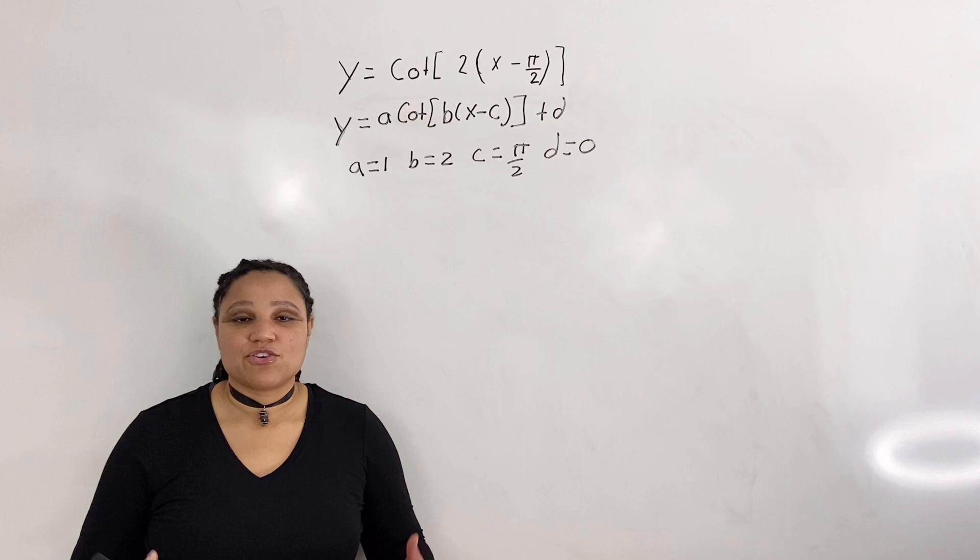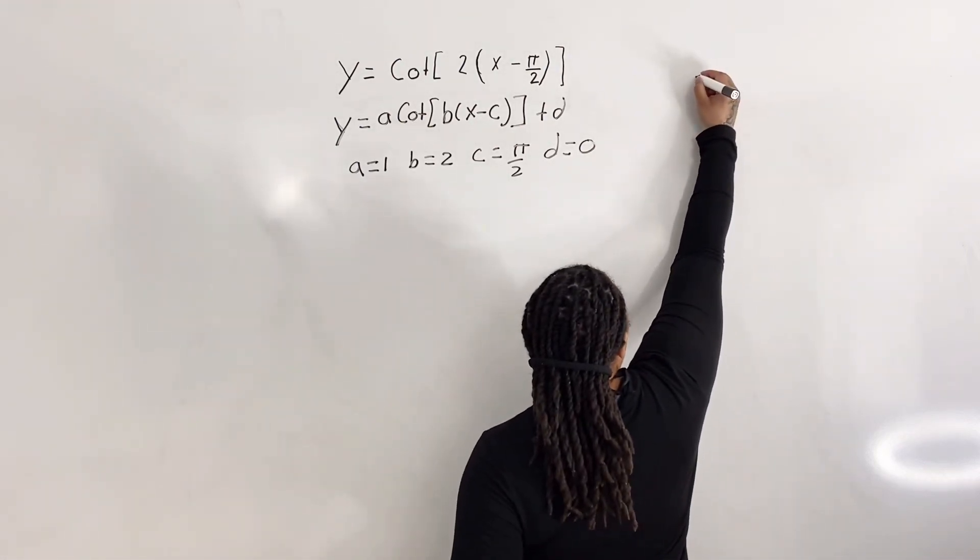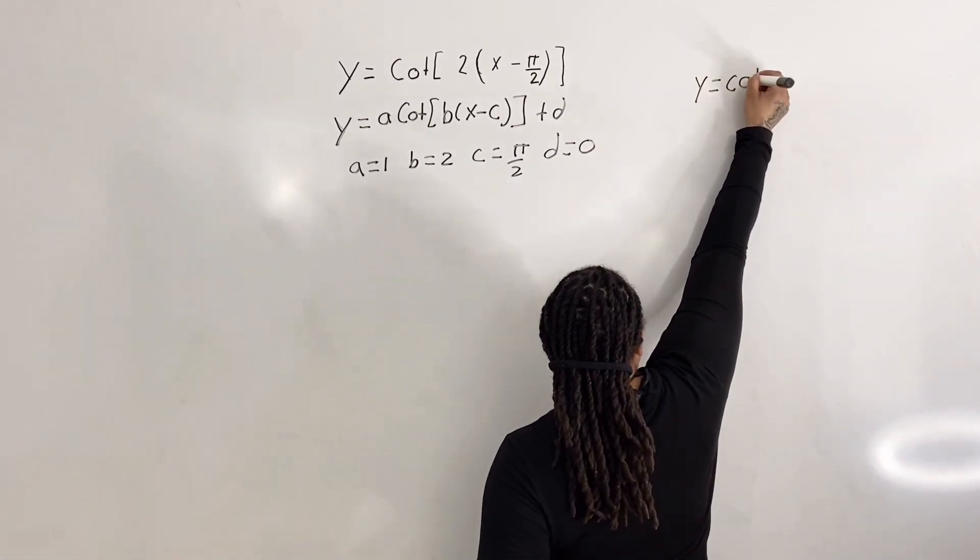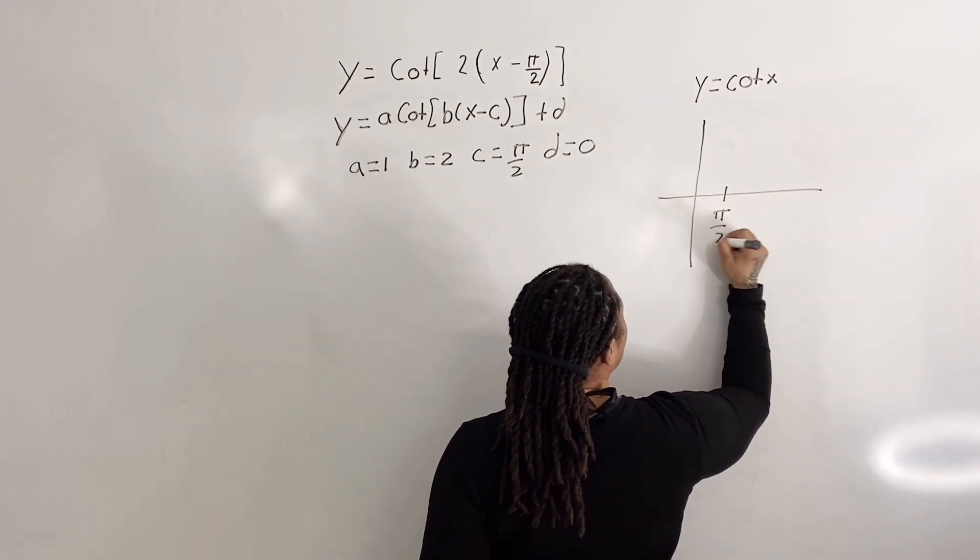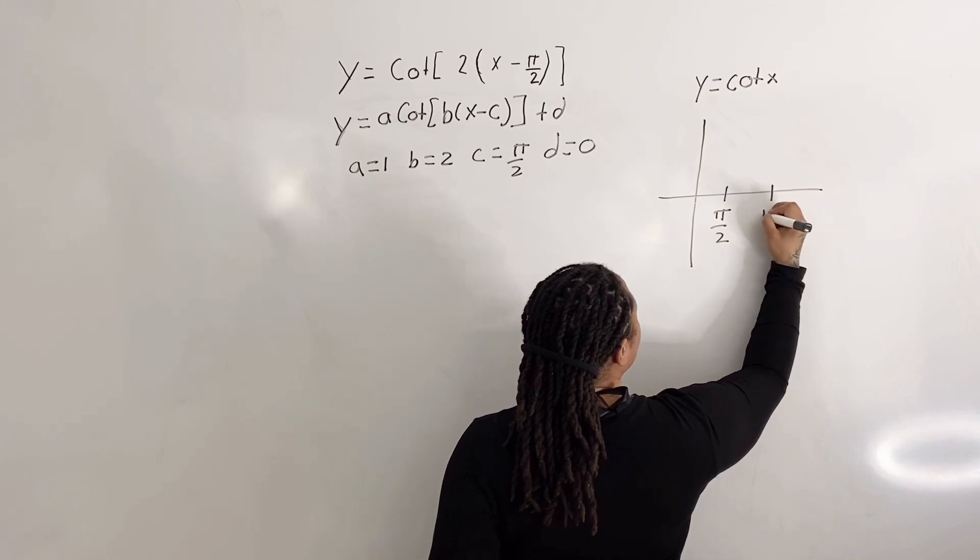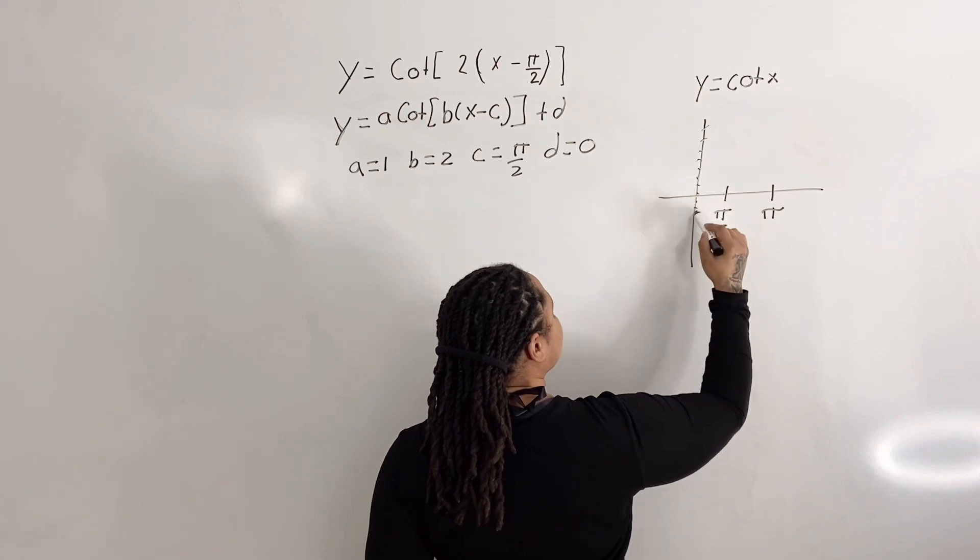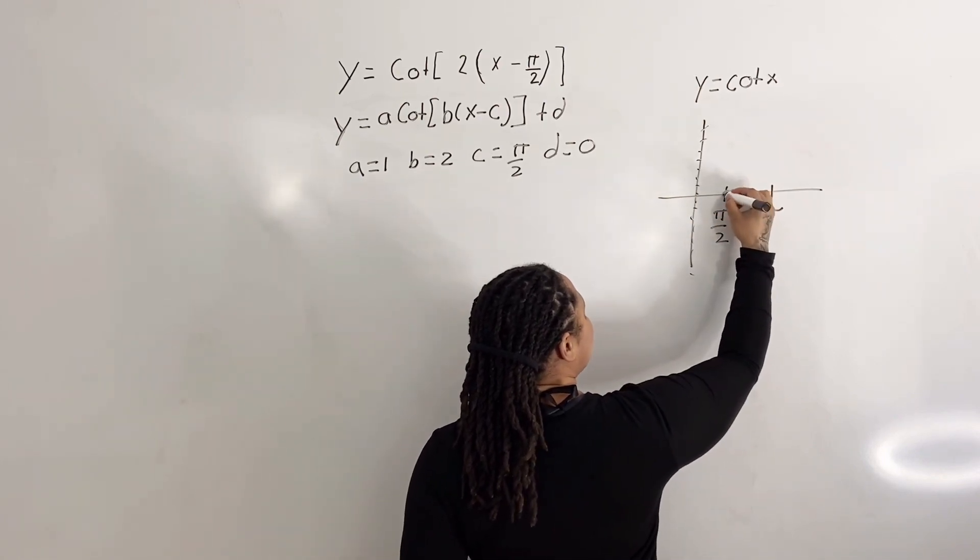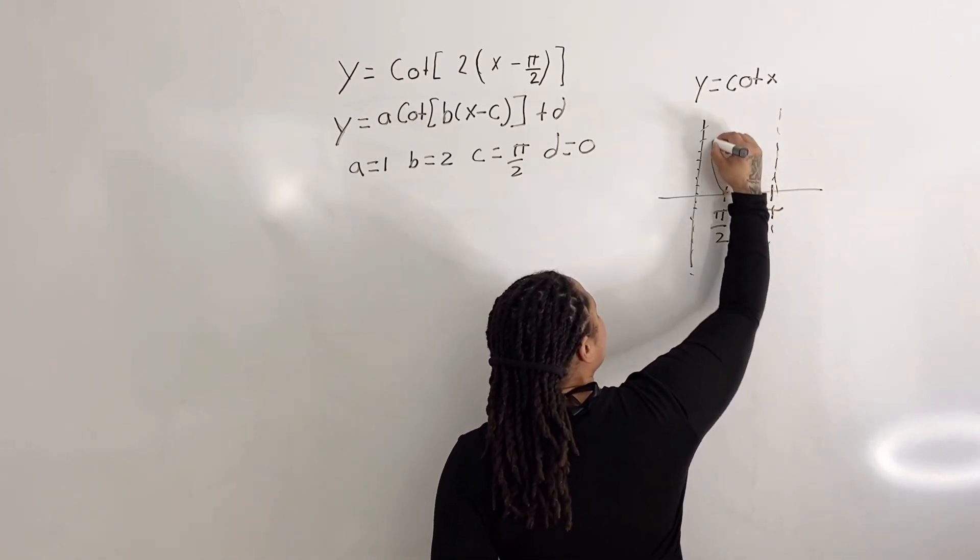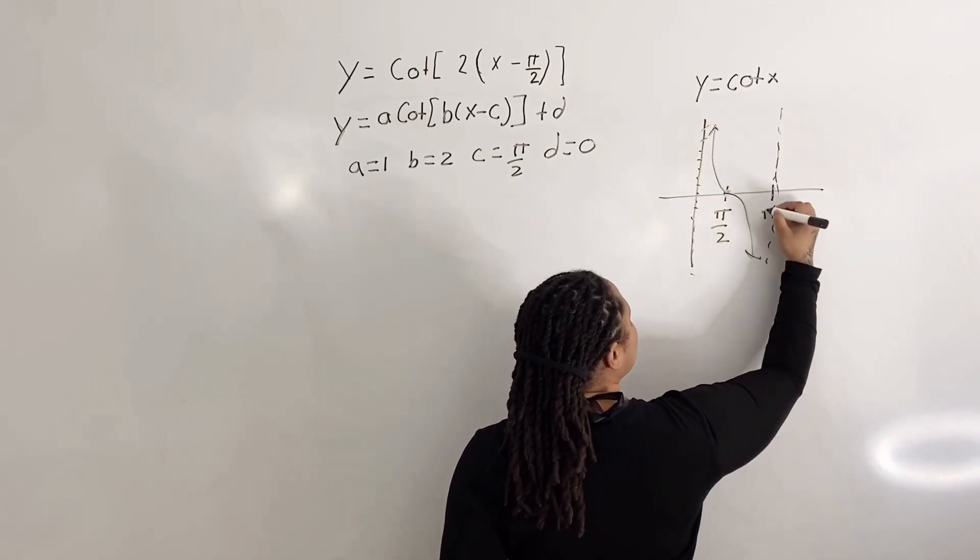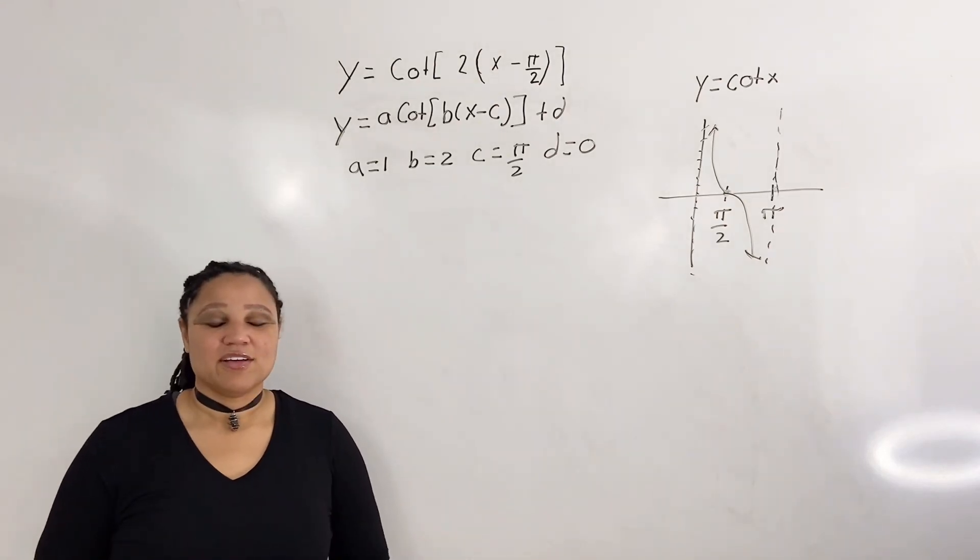Next, we want to look at our parent graph. What does the parent graph of cotangent look like? Well, the parent graph of y equals cotangent x looks something like this. We have pi over 2 and pi. And what we have is an asymptote at 0, we have an x-intercept at pi over 2, and we have another asymptote at pi. And our graph is going to swing out like that.